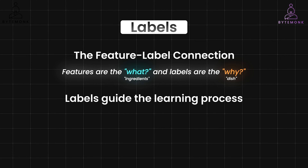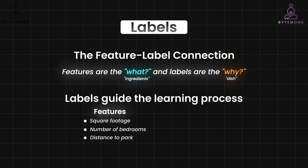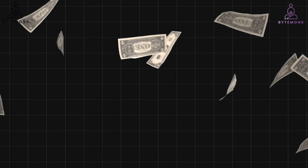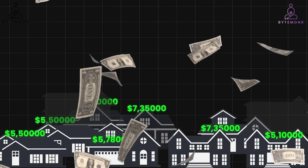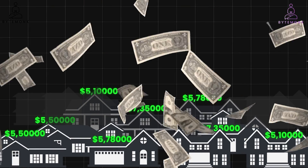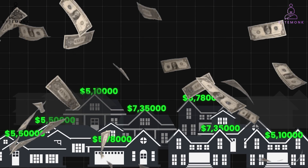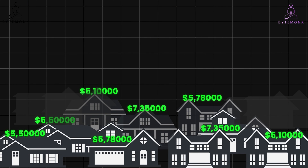For example, in our real estate case, the features could be square footage, number of bedrooms, or the distance to the park, whereas the label could be the selling price of the house. By looking at many houses with these features and their corresponding selling prices, which are the labels, the model learns the relationship between features and how they influence house prices.